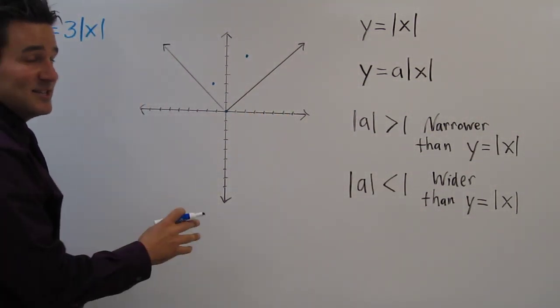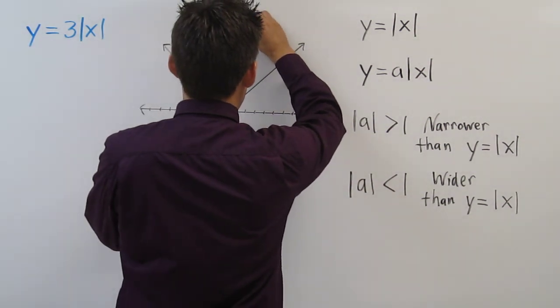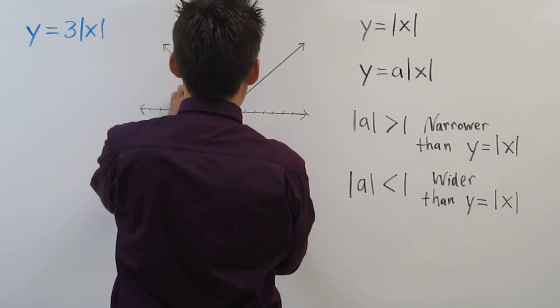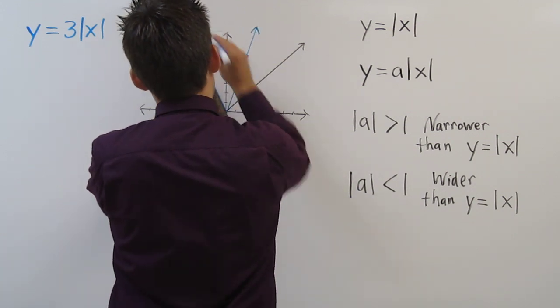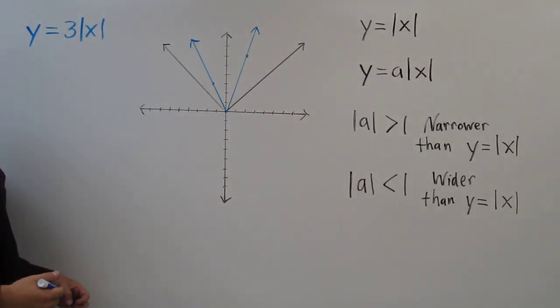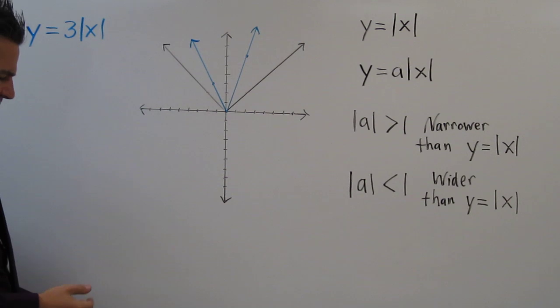When we connect these points, we can see that the graph is narrower than the parent function. Let's try a different one.